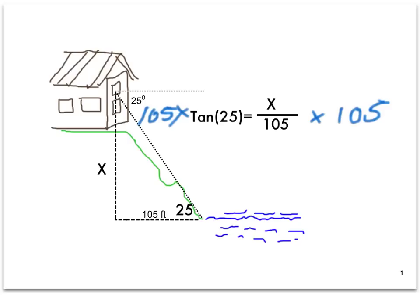I'm going to multiply both sides of the equation by 105 to start to solve. And I get 105 times tangent of 25 equals the distance I'm trying to calculate.